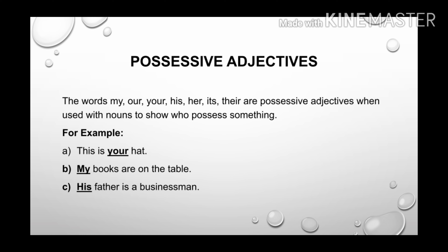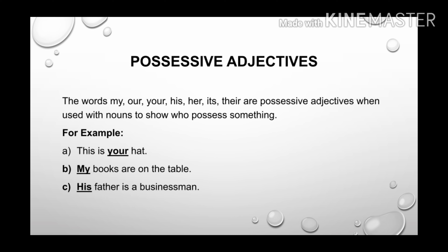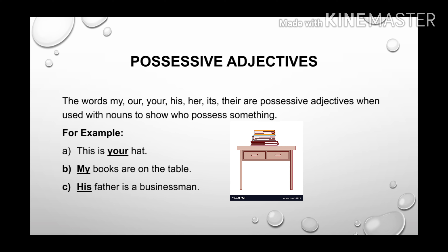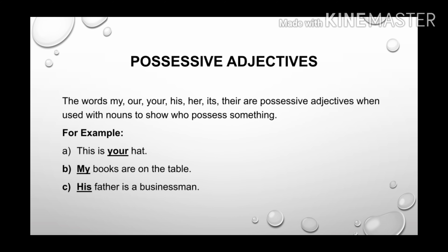Let's move on to our last kind of adjective which is possessive adjectives. The words my, our, your, his, her, its are possessive adjectives when used with nouns to show who possesses something. Possessive adjectives tell about the possession or ownership of a thing. For example: This is your hat — the word your is the possessive adjective as it is telling about the ownership of the hat. My books are on the table — my is the possessive adjective as it is telling about the possession of the books, like to whom the books belong. His father is a businessman — here his is the possessive adjective.